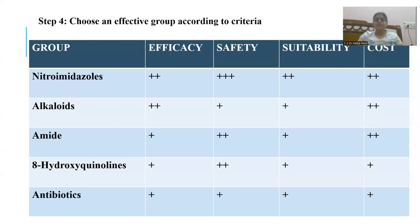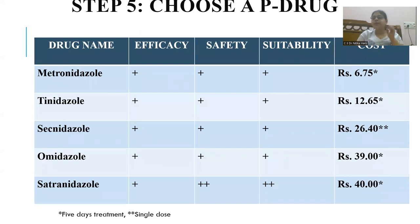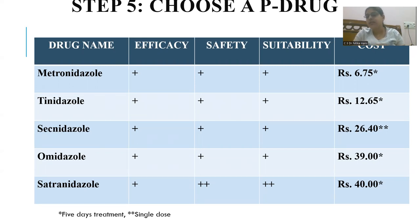The nitroimidazole group is the effective P-drug group. Safety, tolerability, and efficacy are greater compared to alkaloids, amides, hydroxyquinolines, and antibiotics. Among the nitroimidazoles — metronidazole, tinidazole, secnidazole, and ornidazole — all are similar in efficacy, safety, and suitability. However, secnidazole is more safe and suitable, though it is five to six times more costly than metronidazole, which is the least costly drug.